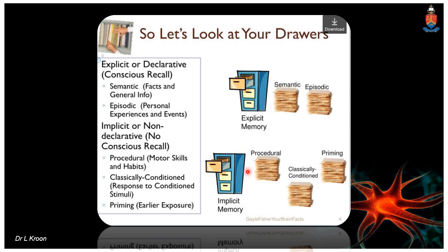Procedural memory governs your ability to ride a bike or shift gears while driving — automated motor tasks. Priming is when a disorder causes you to see a banana and call it 'yellow' rather than naming it correctly. Implicit memory uses storage and retrieval mechanisms that do not involve the hippocampal system. Explicit memory, or declarative memory, requires conscious recall and pertains to specific facts, knowledge, animal names, picture naming, and categorical information.